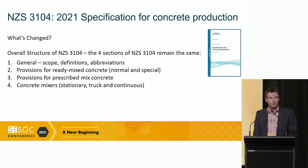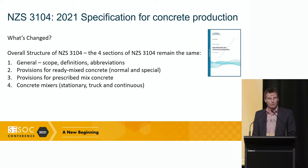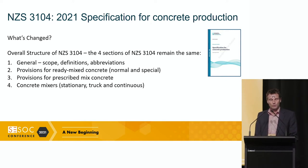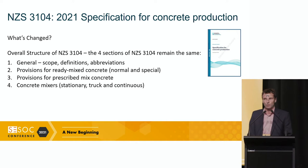What has changed? At a high level, the overall structure of the document remains the same. It's got four key sections: the general front end with scope, definitions, and abbreviations; then the key section two, the provisions for ready-mixed concrete covering normal and special; section three, provisions for prescribed mixed concrete, which has sort of gone out of vogue and is probably hardly used in normal concrete production; and finally a section on concrete mixes, covering provisions for stationary, truck, and continuous mixes.